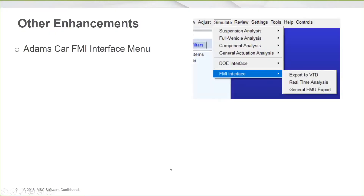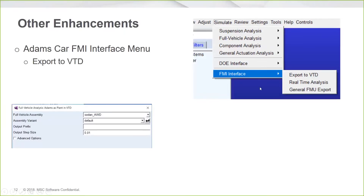Moving on to a few other enhancements — the Adams Car FMI interface menu has been added. This consolidates three actions that have been in a couple of other menus within Adams Car. FMI stands for Functional Mockup Interface. Within Adams Car, this covers three things: the export to VTD that we just showed, sending the Adams plant for VTD. When you select export to VTD, the dialogue has defaults for signals like steering, throttle, brake, and gear coming in, and wheel states and chassis states going out. There are also advanced options for the new things you can do with Adams as a plant in VTD.